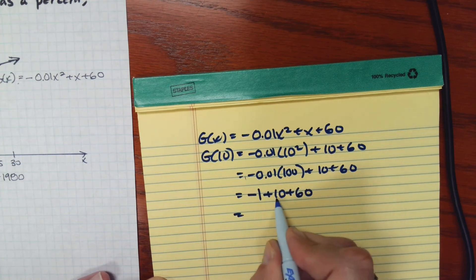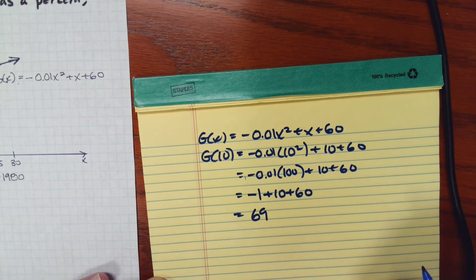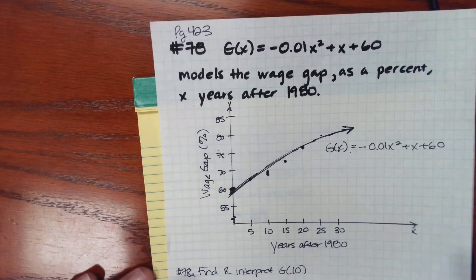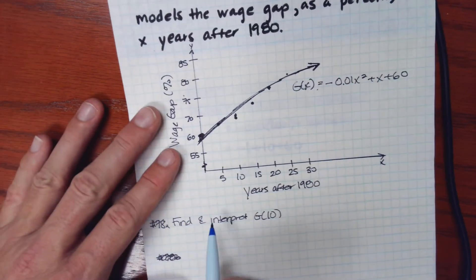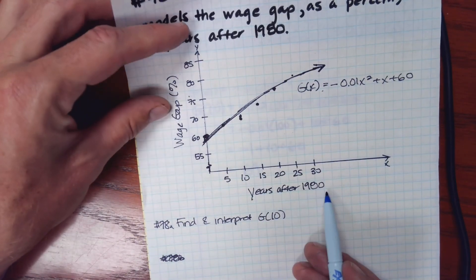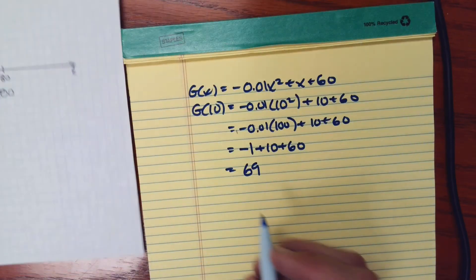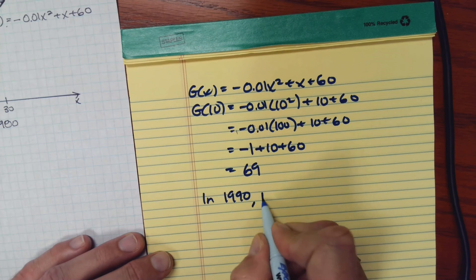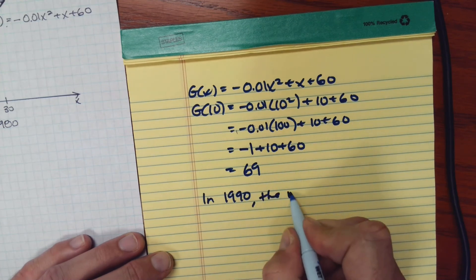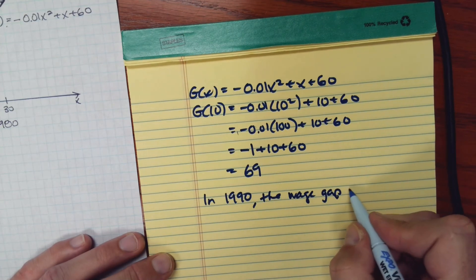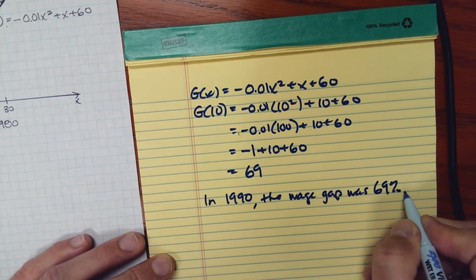So that would be 70 minus 1 or 69. So as far as interpreting this, we evaluated g of 10. These values are years after 1980. So 10 years after 1980. So in 1990, the wage gap was 69 percent.